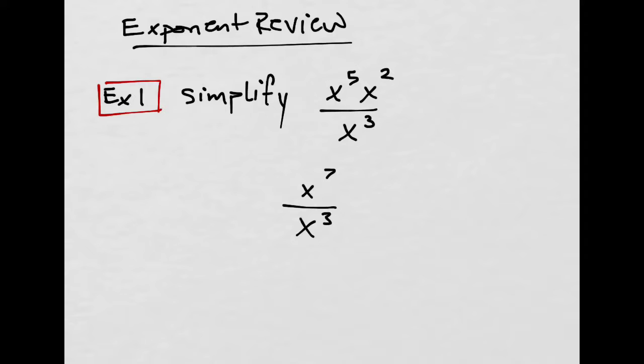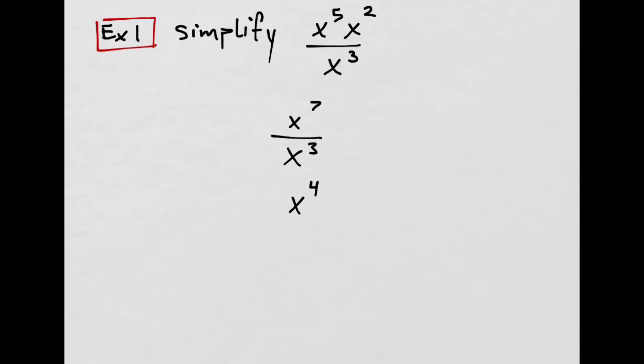And then if we're dividing variables like this, we're dividing here, we subtract the exponents. This would be x to the 4th, because 7 minus 3 is 4. And so you'd have that.